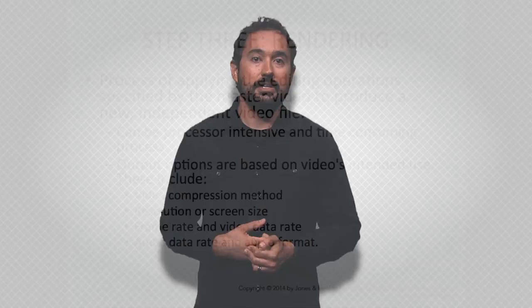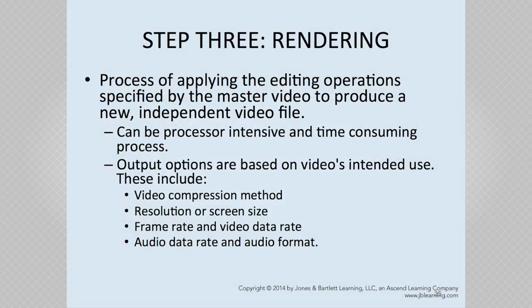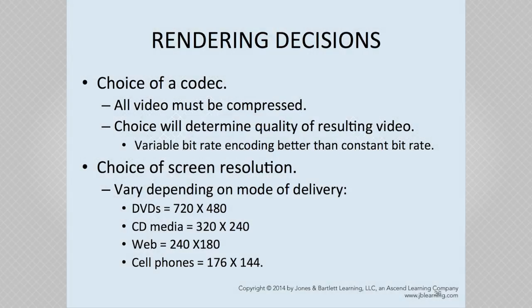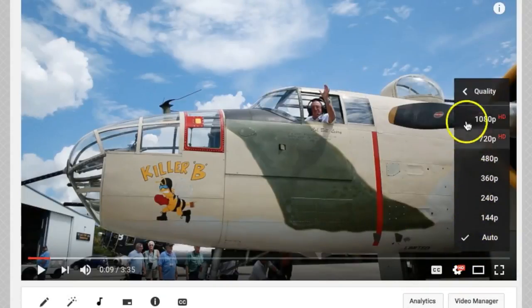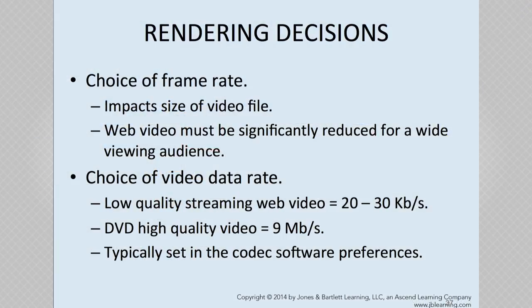The final step is rendering. Rendering is defined as the process of applying the editing operations specified by the master video to produce a new independent video file. In the past this took forever, but new software and hardware advances have made this much quicker. Rendering requires a choice of codec and screen resolution — depending on your delivery and resolution, choose the correct rendering codec and resolution. I predict that all of you will be rendering at 1920 by 1080 or higher. Transcoders such as YouTube will transcode your media into smaller formats needed to play back on multiple devices. Pay attention to the frame rate and video data rate as well.